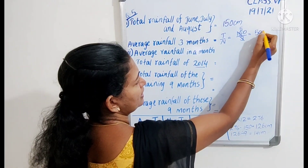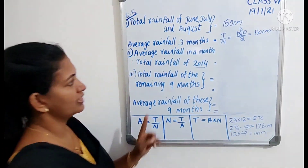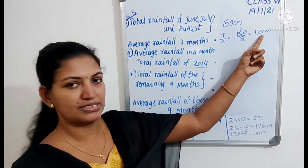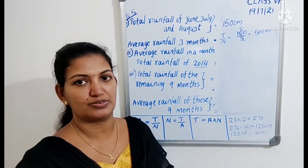So, the average rainfall of the 3 months is 50 cm. This is the answer to the first part of the question.